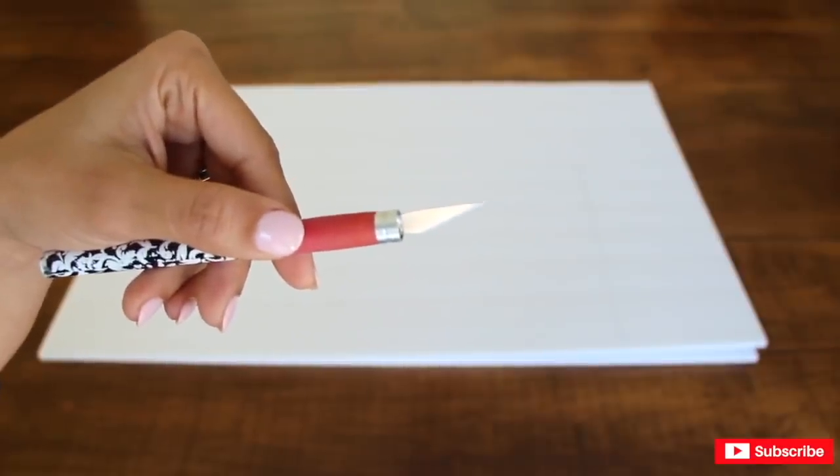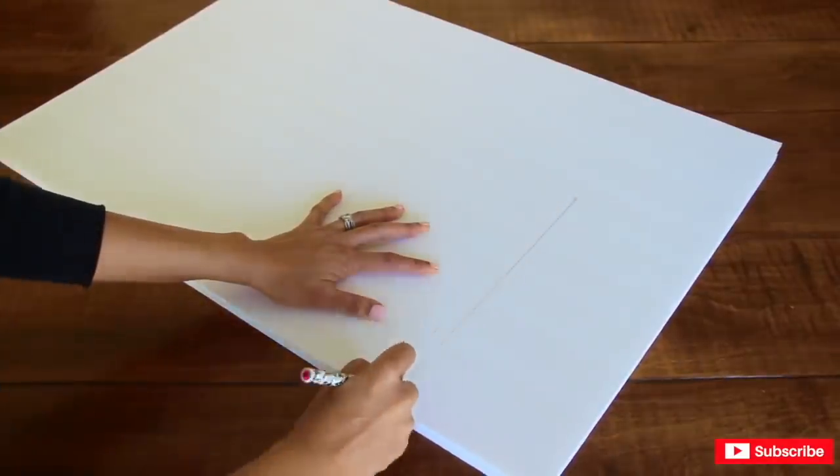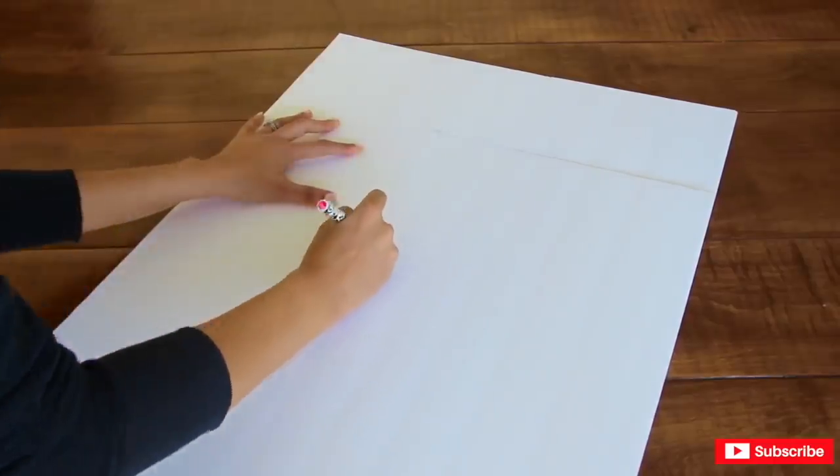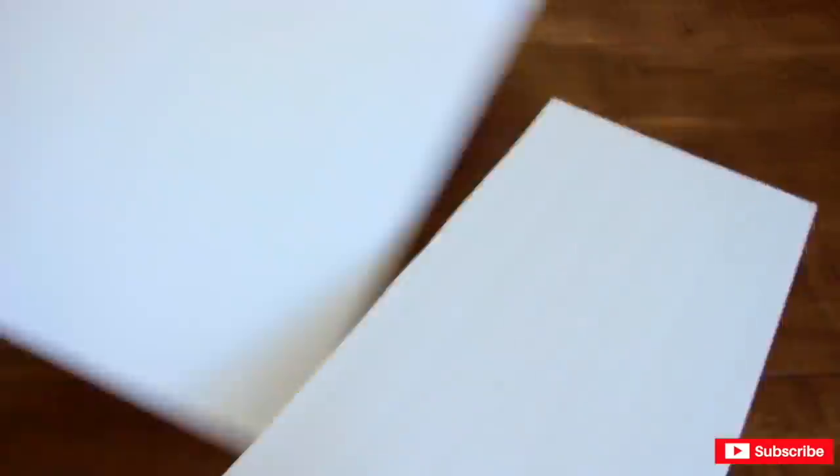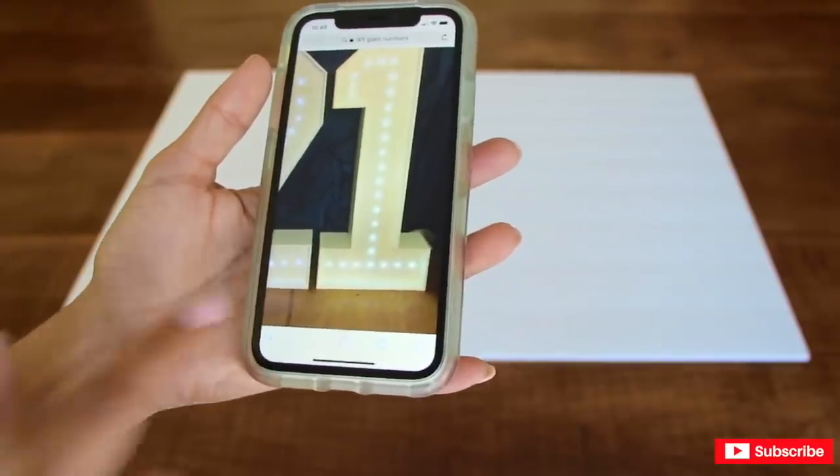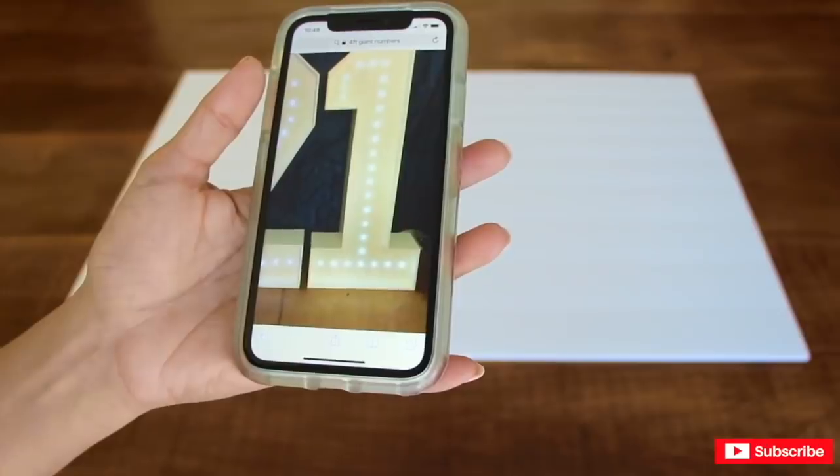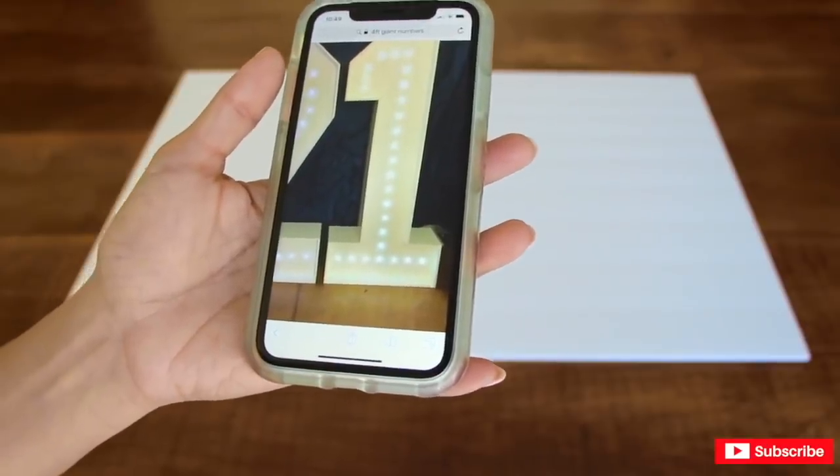Now I'm going to use my exacto knife to cut out the foam board. Next I'm going to be making these two side panels and I'm going to be making them one foot by one foot.